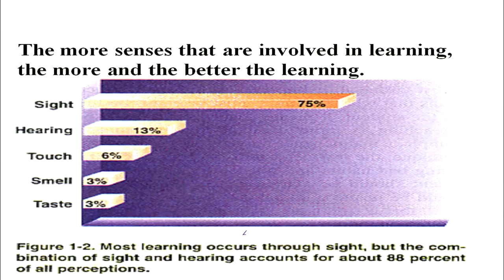The more senses that are involved in learning, the better. Maximum use of sight and hearing contains 88% retention and makes our learning better. Otherwise, all five senses are used.